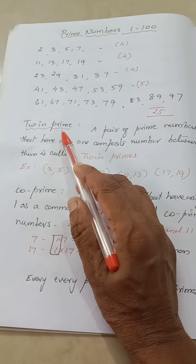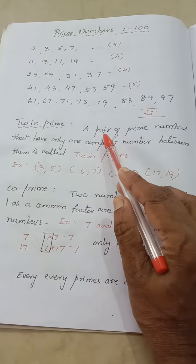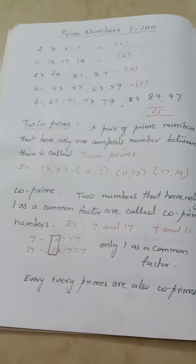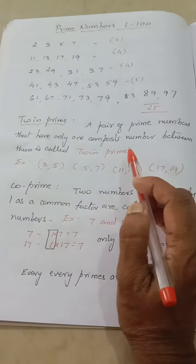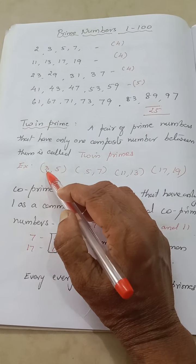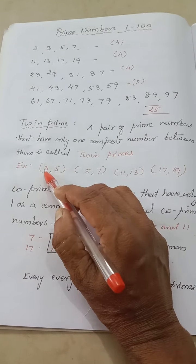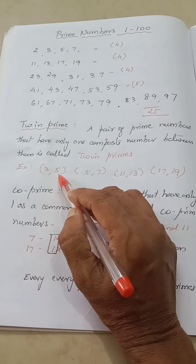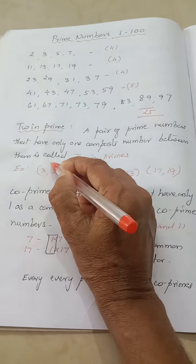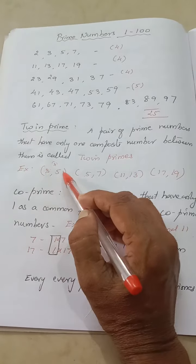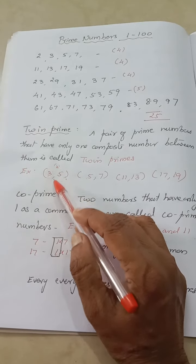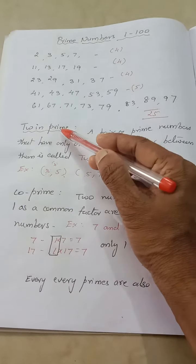Next let us see what is meant by twin prime. A twin prime is a pair of prime numbers that have only one composite number in between them. For example, 3 and 5 — both are prime numbers, and in between them is 4, which is a composite number. Since we get only one composite number in between, such numbers are called twin primes.